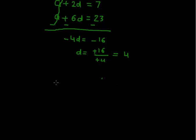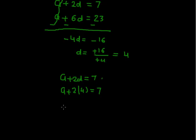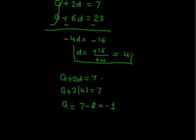Now that we have D equals 4, substituting into equation 1: A plus 2 times 4 equals 7, so A equals 7 minus 8, which equals minus 1. After solving the two expressions, we got D equals 4 and A equals minus 1.